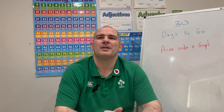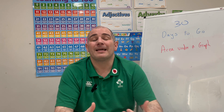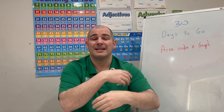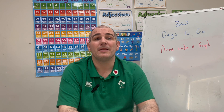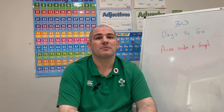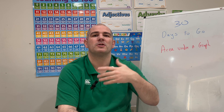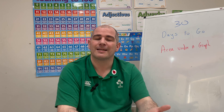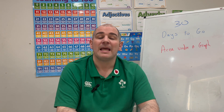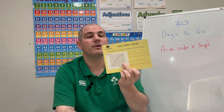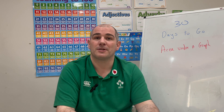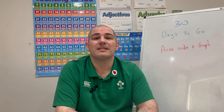I really like this topic because of the variety of questions you can be asked. You could be given a travel graph and work out the area underneath it to find the distance travelled. Or you might be given a curve and need to work out an estimate for the area under it — and then be asked whether it's an underestimate or an overestimate. If you've got the Cope Maths Revision Cards, card number 65 covers area under a graph. Let's get started.